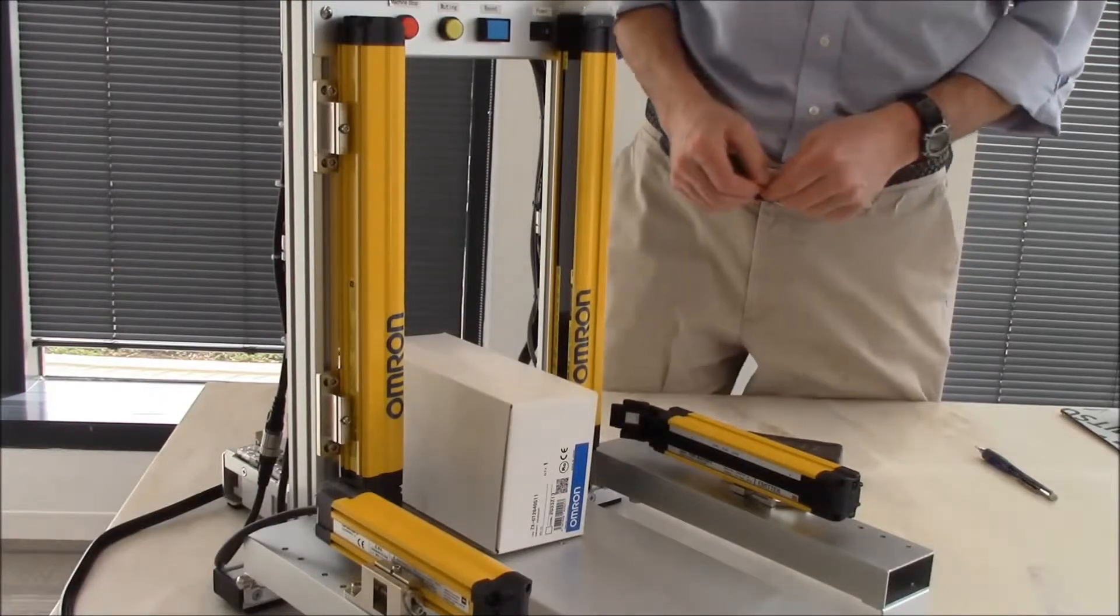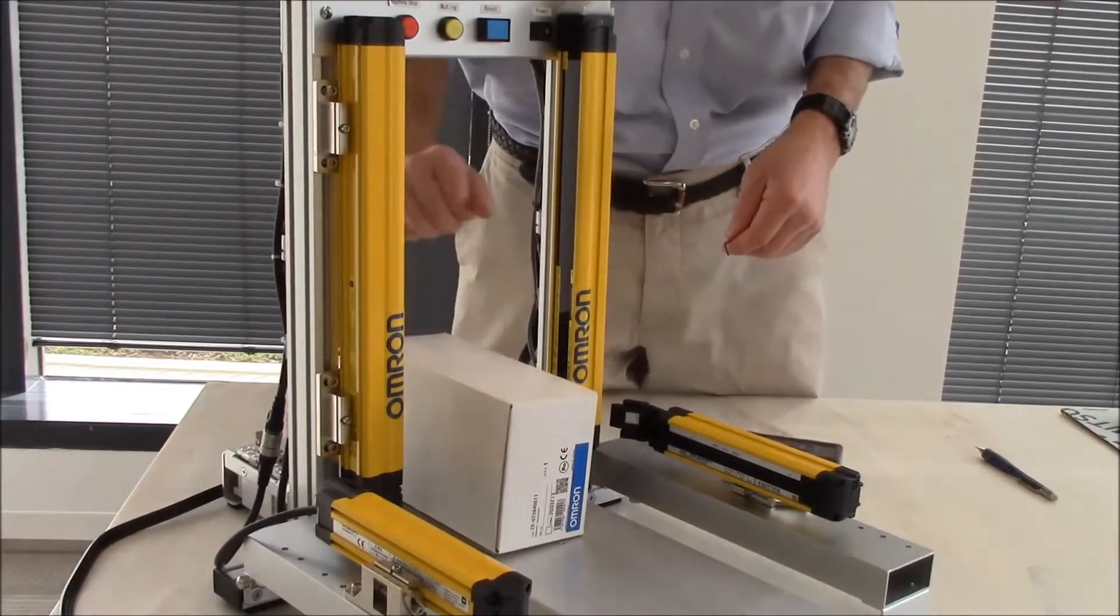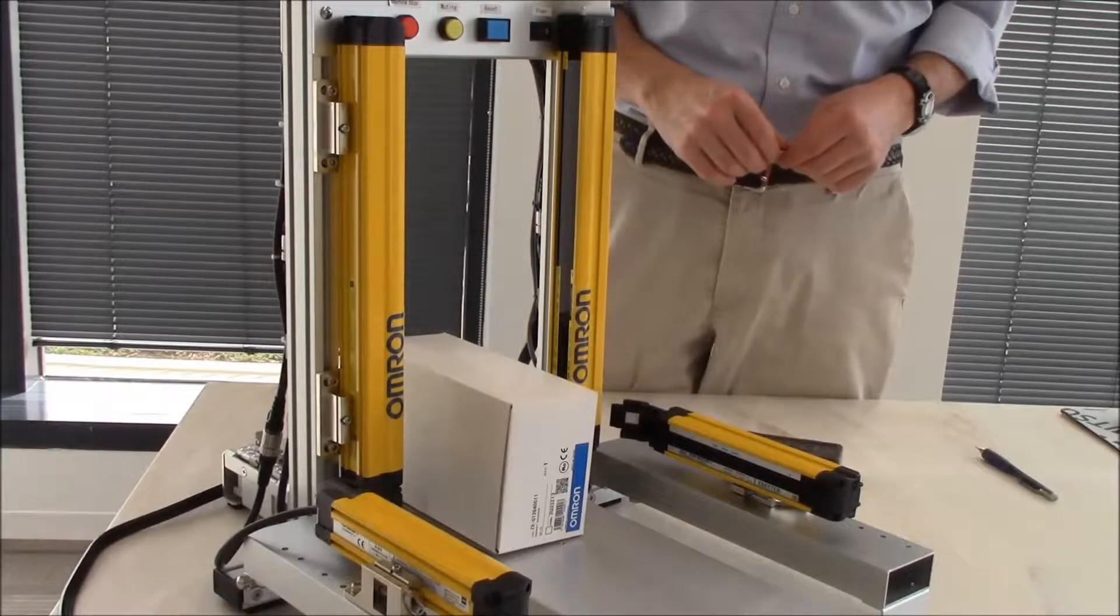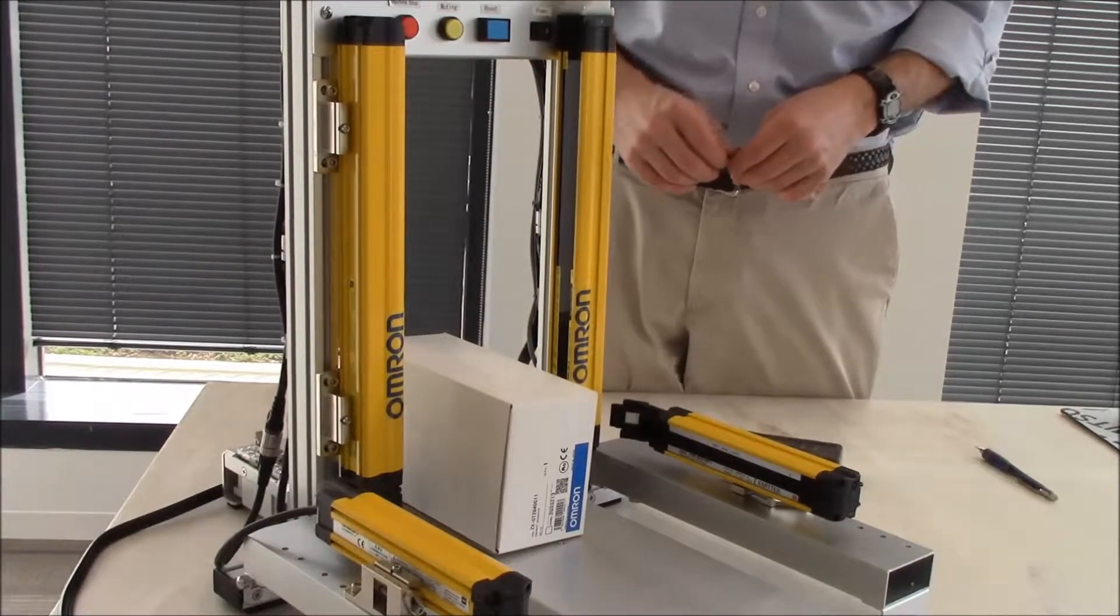Today I'm going to demonstrate how to set up the fixed blanking option using our F3SG safety light curtain.